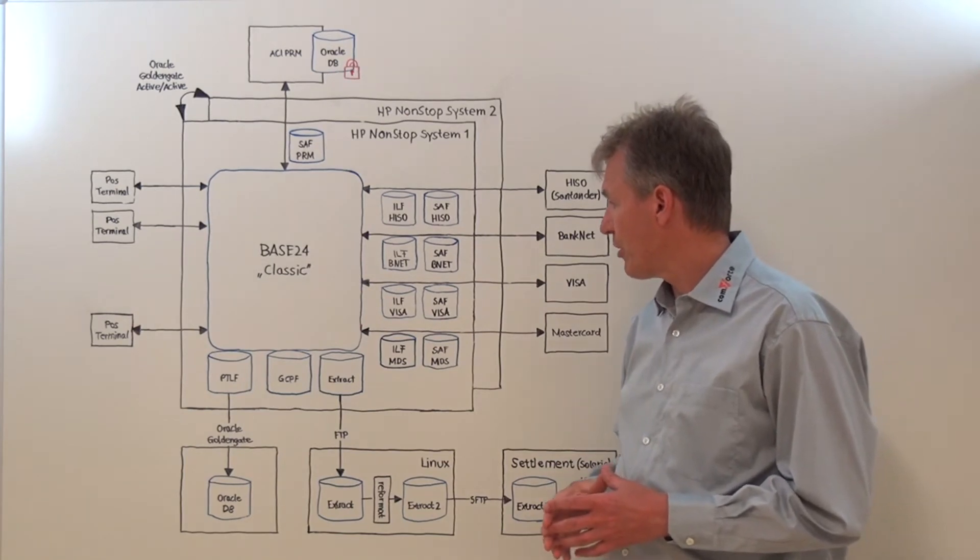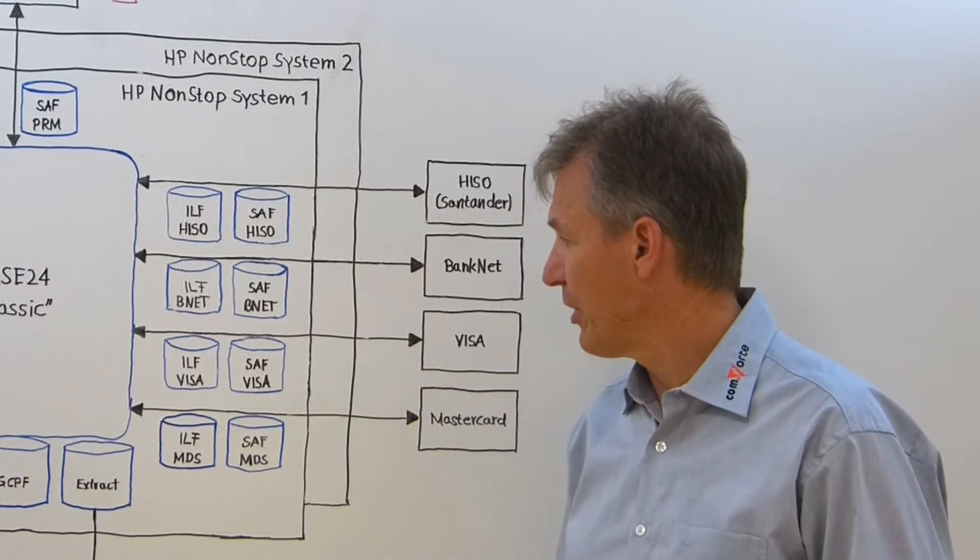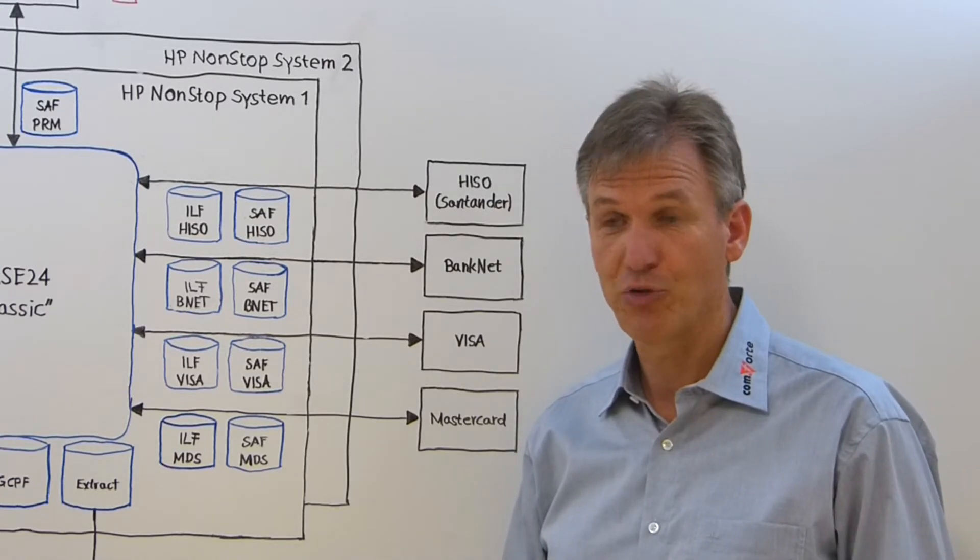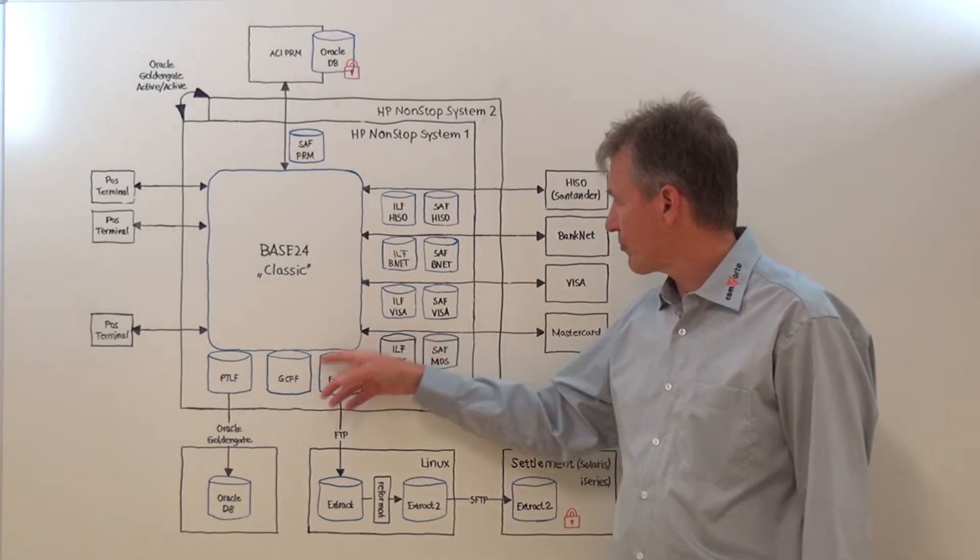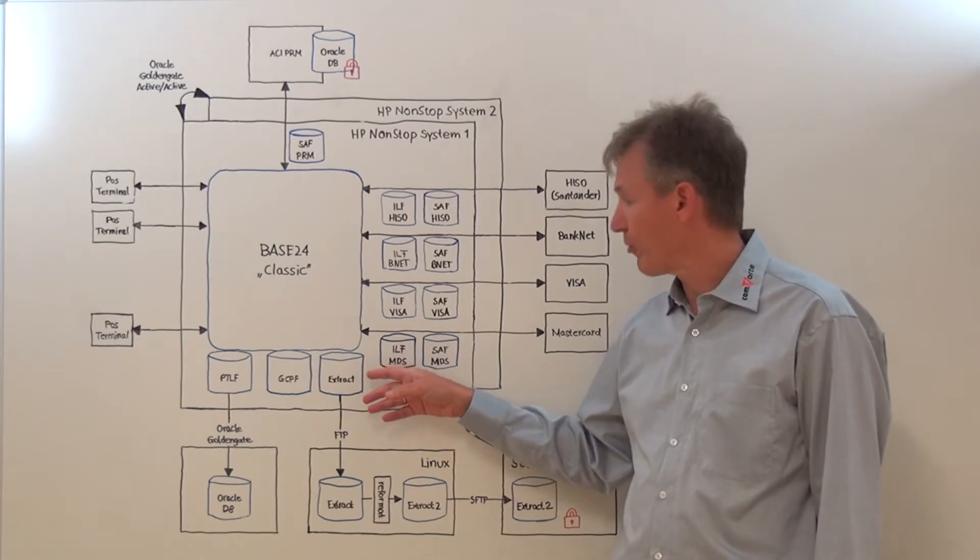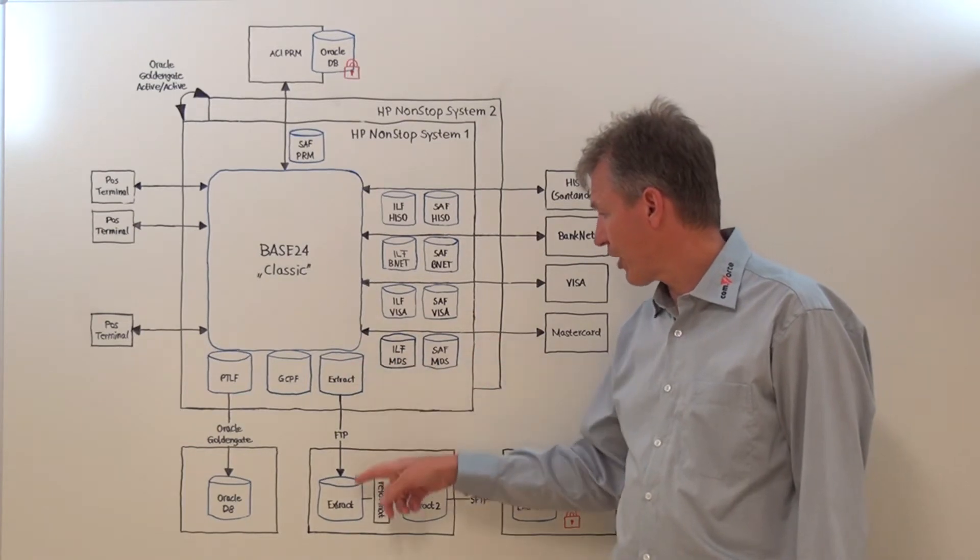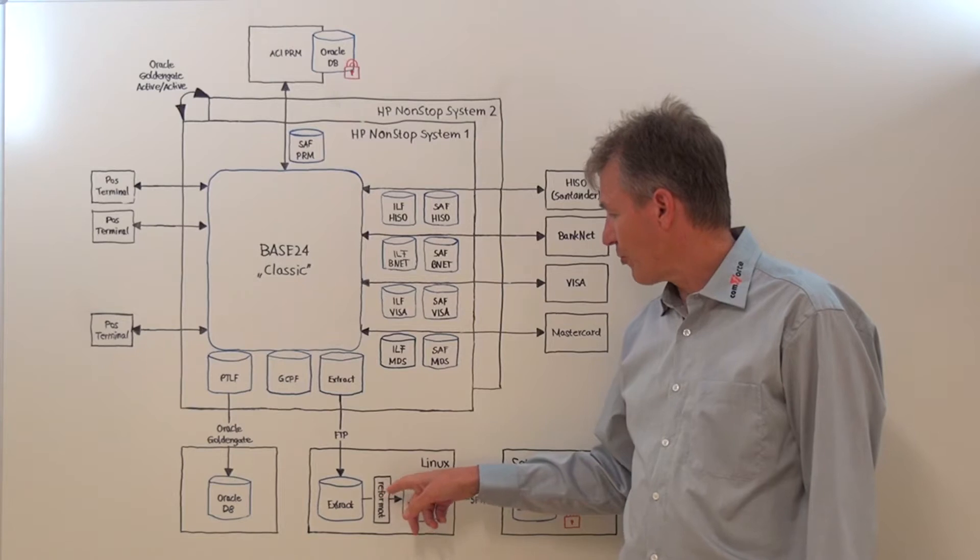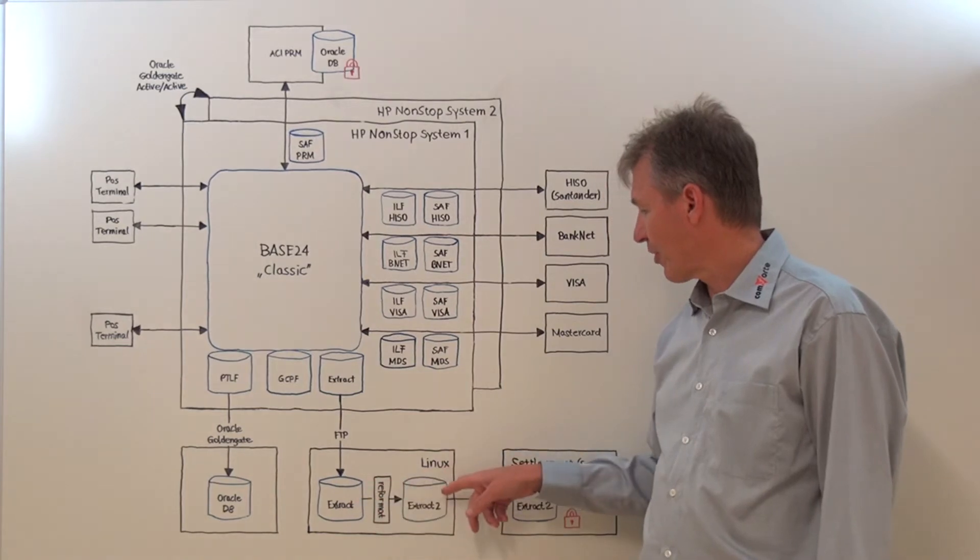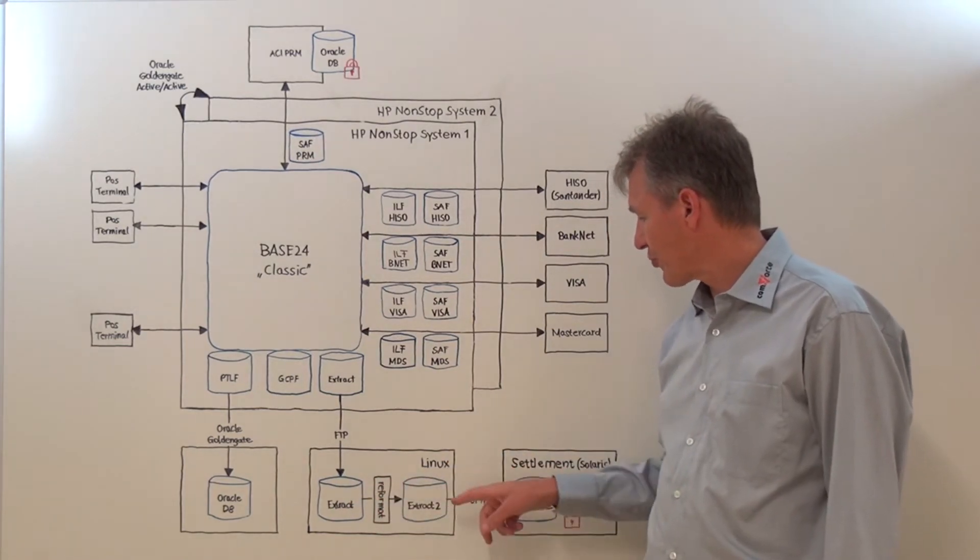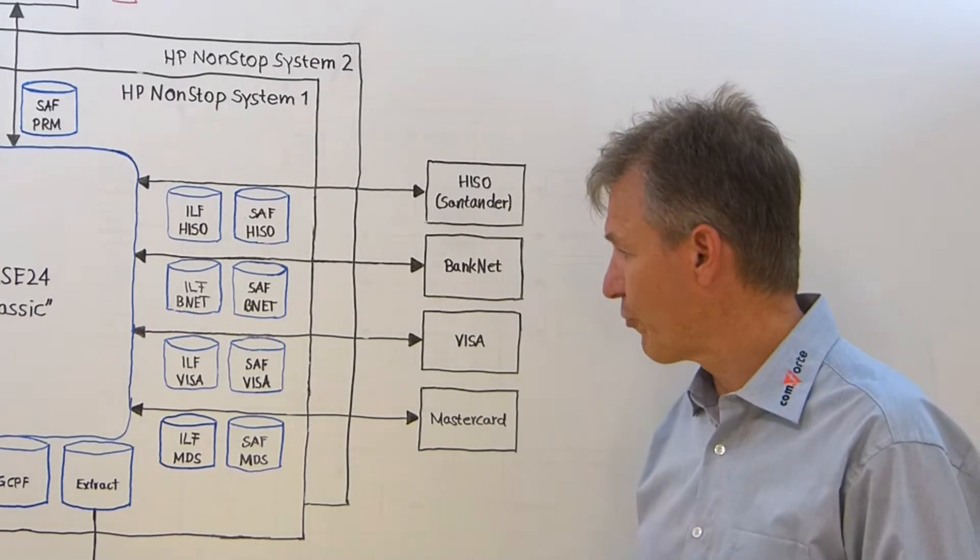As we see also here, we have several systems that are connected to the BASE24 system and PAN data is actually exchanged between those systems. We have, for example, the extract file that is generated by BASE24 on a regular basis which also contains PAN data that is transferred to a Linux system. On this Linux system, there is a reformatting process which takes the data and reformats it to a second file which is then transferred via SFTP to a settlement system where the final processing is performed.